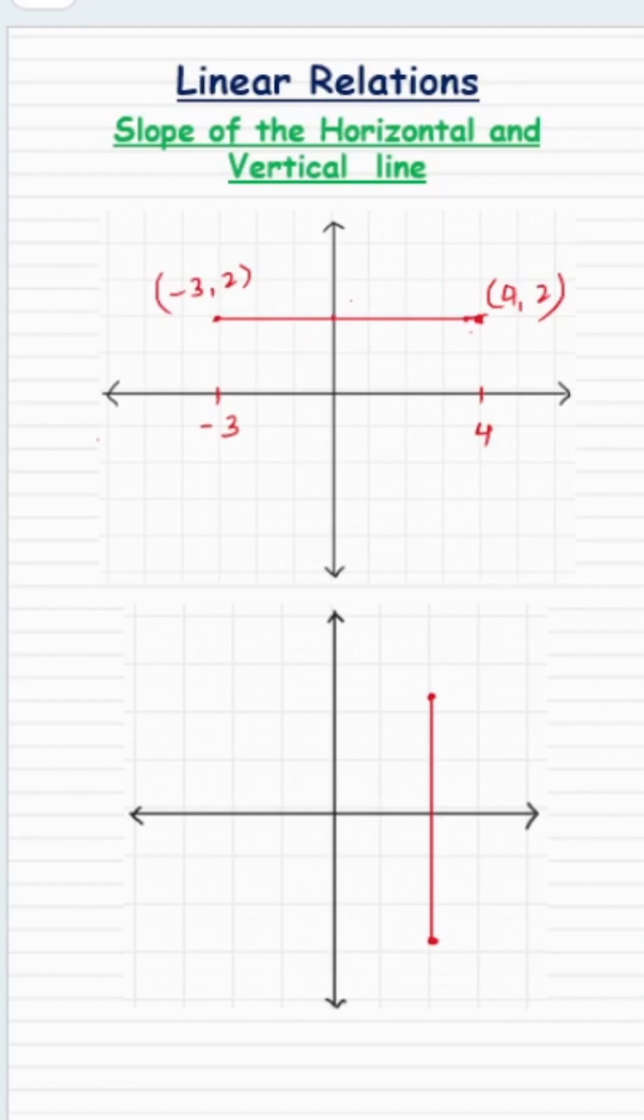So because there is no change in the y value, the rise value is 0. So the slope m, which is given by the formula of rise over run, rise is 0. There is no change in the values of y and there will be some value of run.